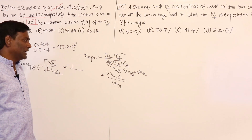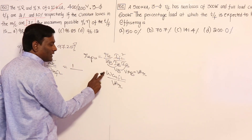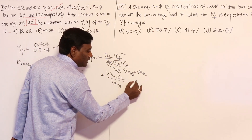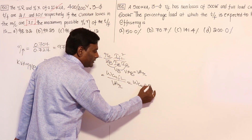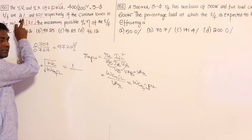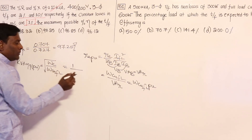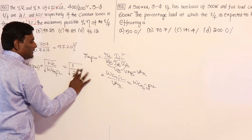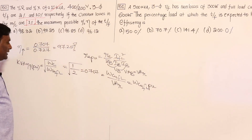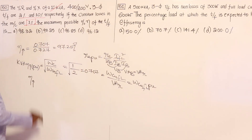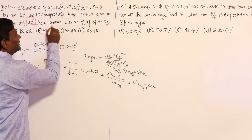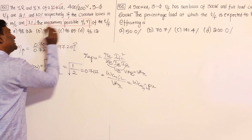Copper loss full load in watts divided by VA-base gives copper loss full load in per unit. Since RE per unit is given as two percent, the full load copper loss in per unit is two percent. Therefore, KVA at maximum efficiency equals the square root of 1% divided by 2%, which equals 0.707.